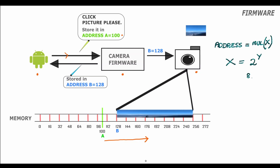X is usually a power of two, such as 32, 64, 128, 512, etc. The value usually depends on the maximum size of the data which could be transferred to the memory in one go. Let's assume that for our hardware X is 64.